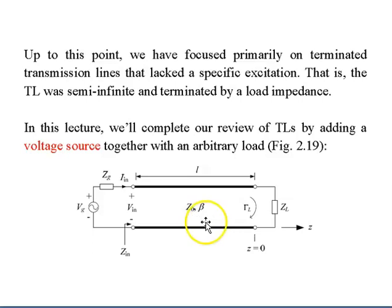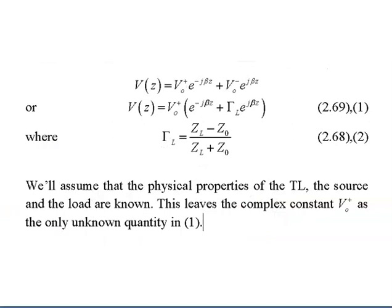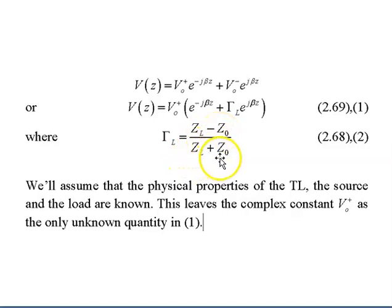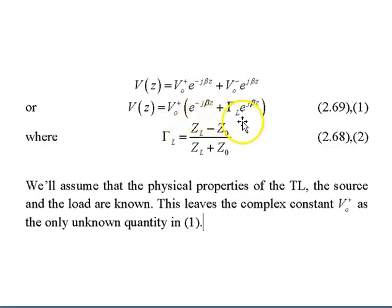Then you have the reflection at the load, which happens here. From the previous lecture, we know that the reflection coefficient at the load is equal to (Z_L minus Z_0) over (Z_L plus Z_0). You also have V(z), which is equal to V_0+ times e^(−jβz) plus the reflection coefficient times e^(+jβz).